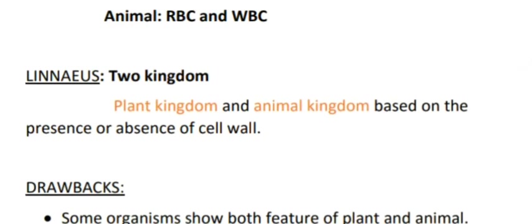Next is Linnaeus. Linnaeus also gave two kingdoms classification, dividing organisms into plant and animal kingdoms.